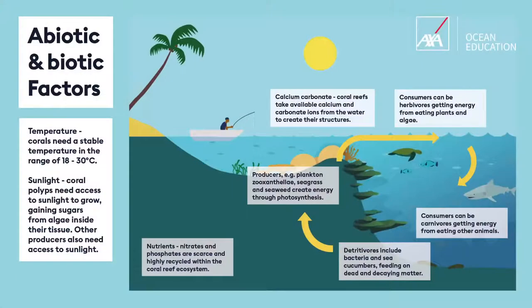Moving to the nitty-gritty for exam purposes — what factors affect the functioning of the coral ecosystem? We talk about two very different groups. Biotic factors refer to anything living on a coral reef — organisms that interact, feed on each other, and compete. They also interact with abiotic factors: non-living physical and environmental factors such as temperature, light, and nutrients in the water column. The interaction between biotic and abiotic factors is what forms a coral reef ecosystem.